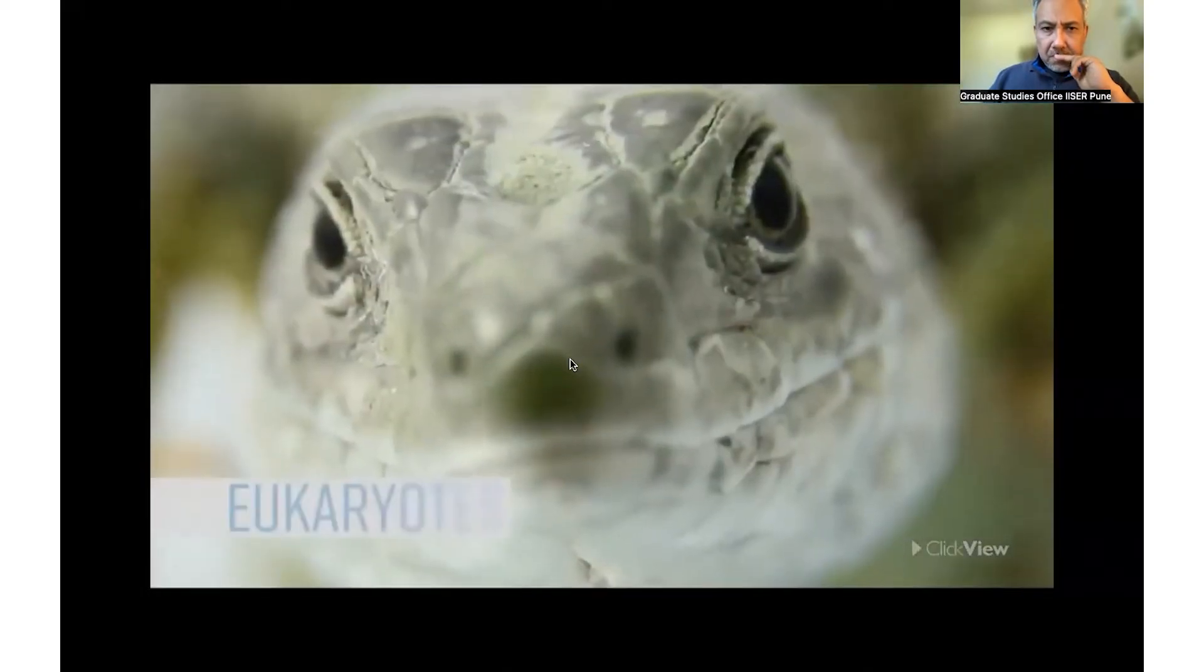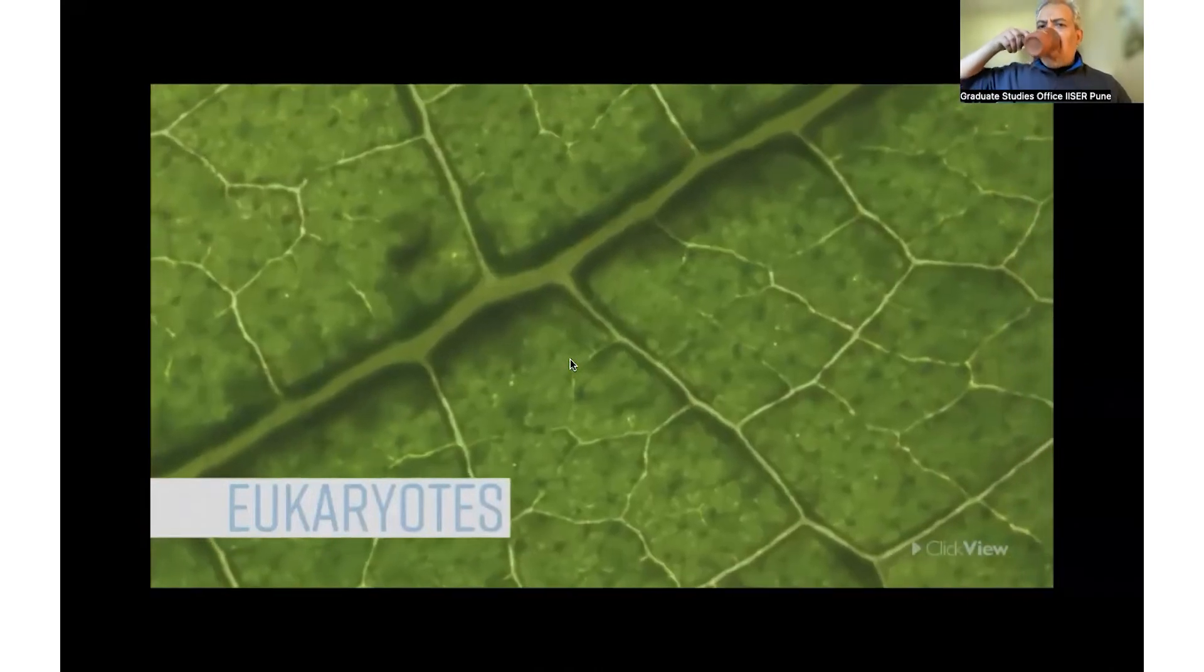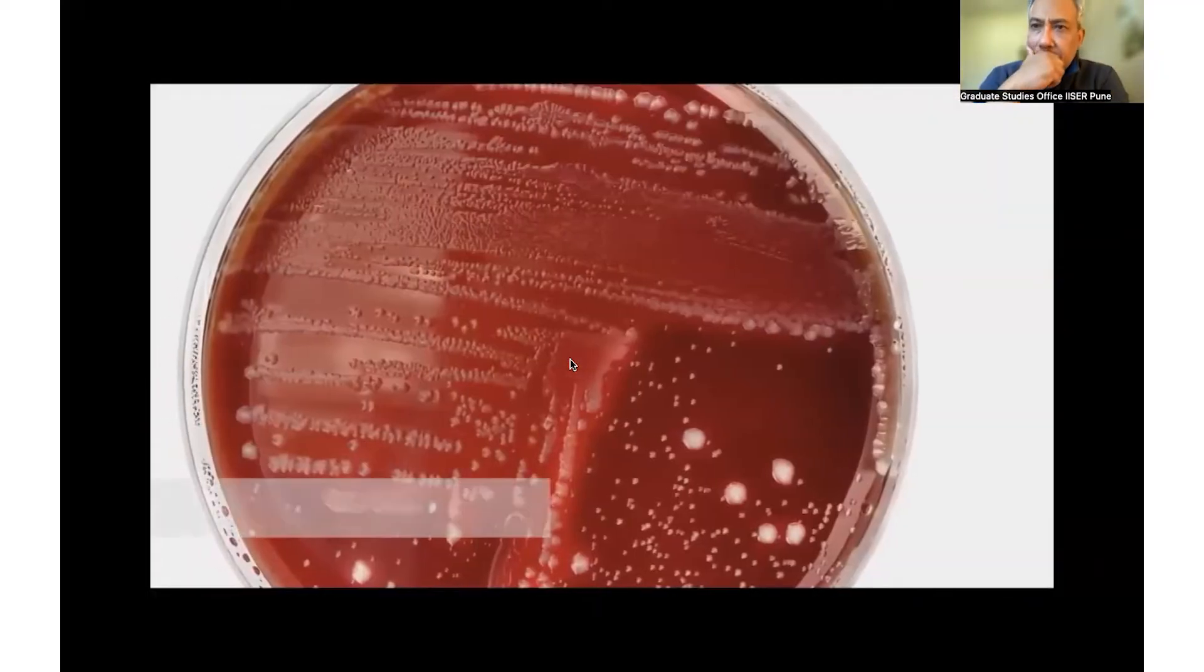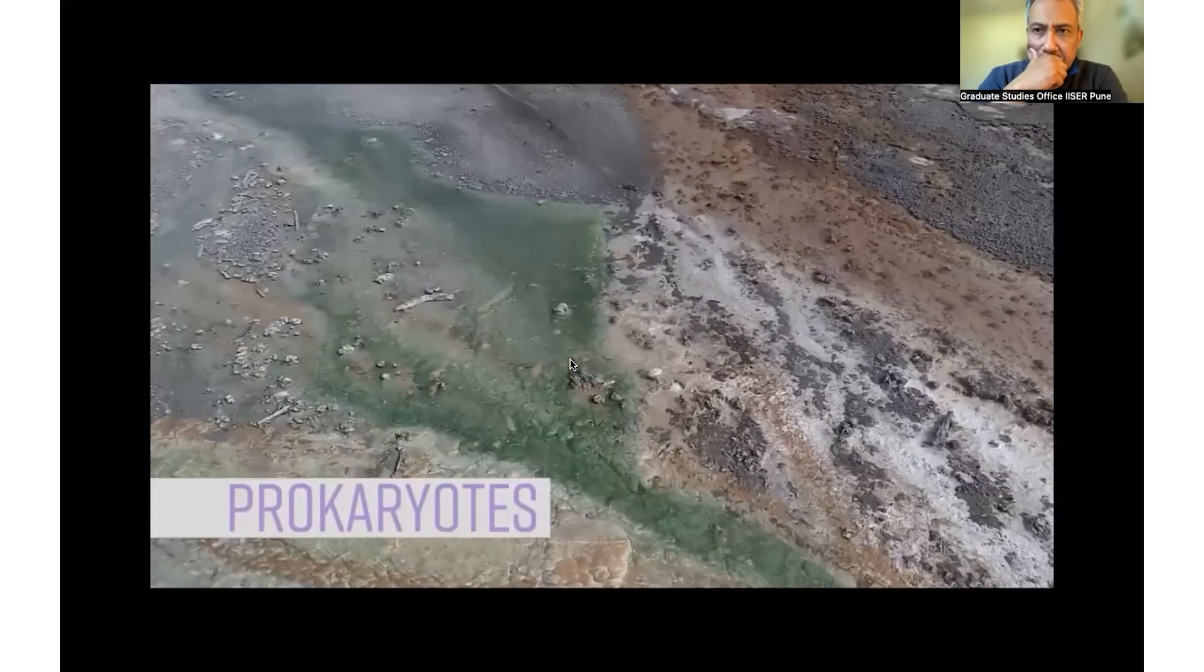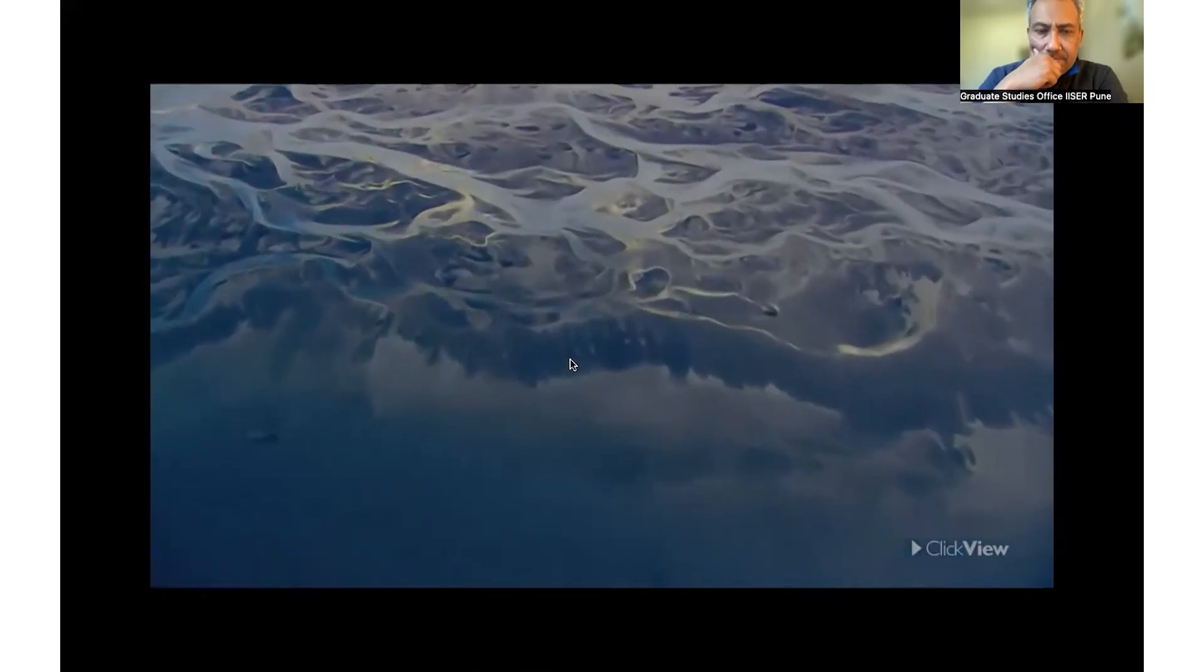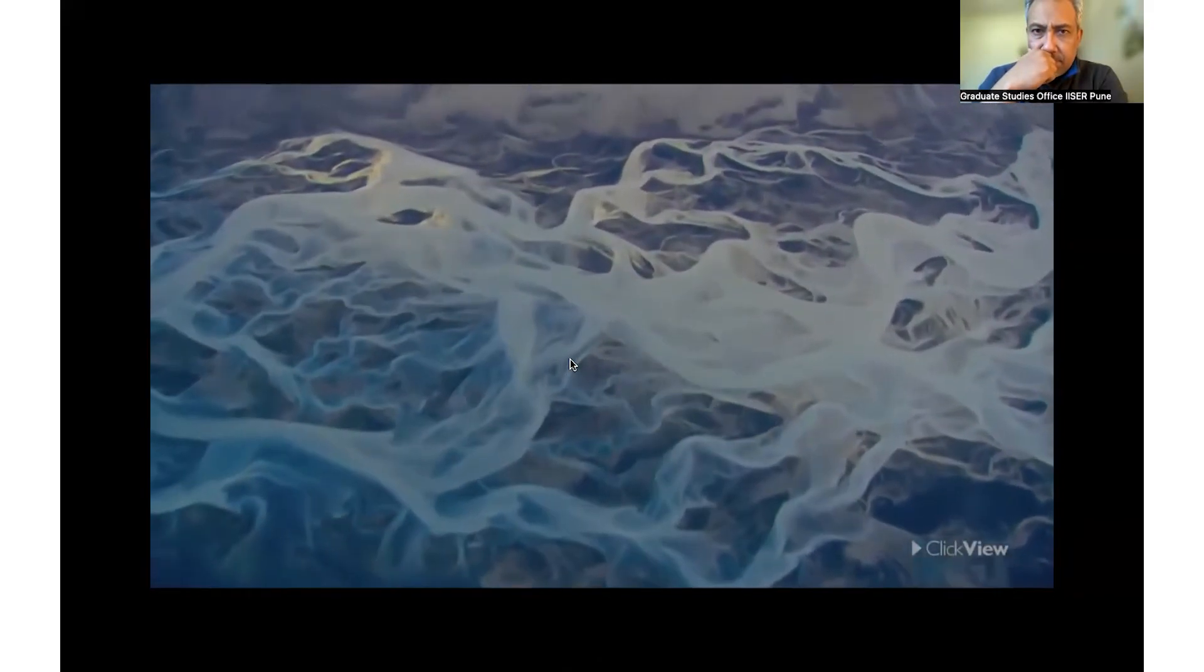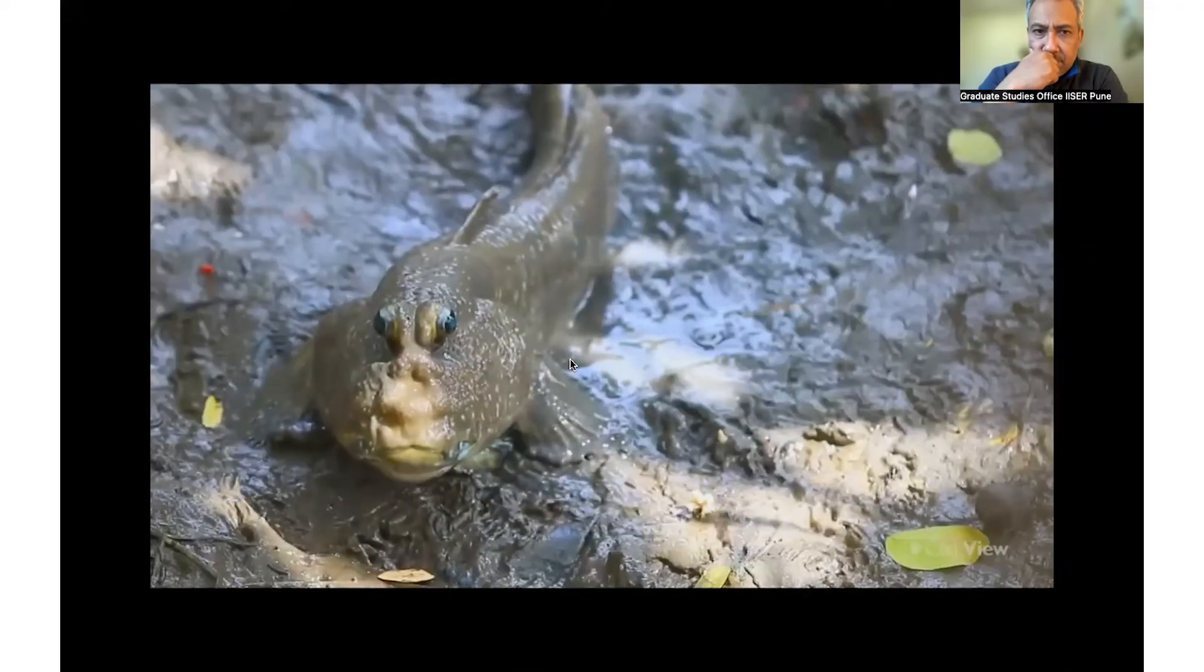Organisms with eukaryotic cells are called eukaryotes, and they include all animals, plants, protozoa, and fungi. Organisms with prokaryotic cells are called prokaryotes, and they include bacteria and archaea. For millions of years, prokaryotes were the only form of life on this planet. Eukaryotes came later as a result of the process of evolution.